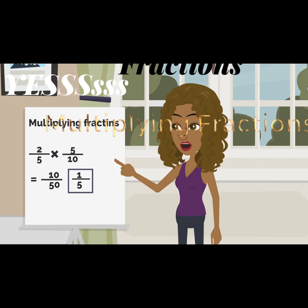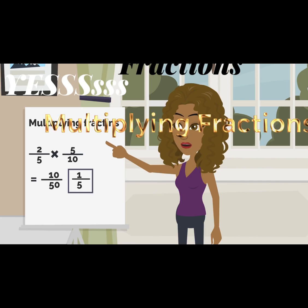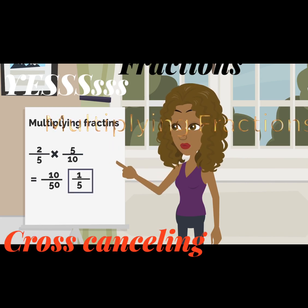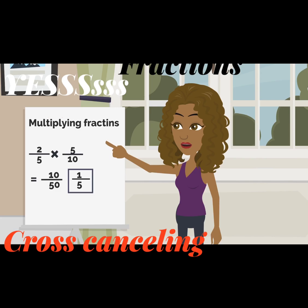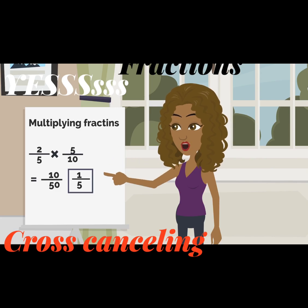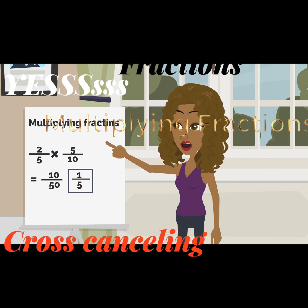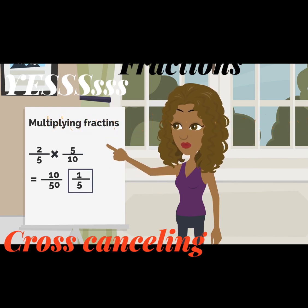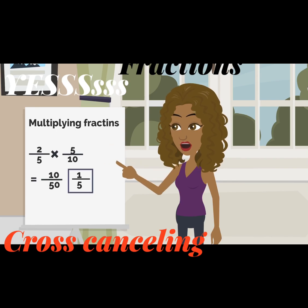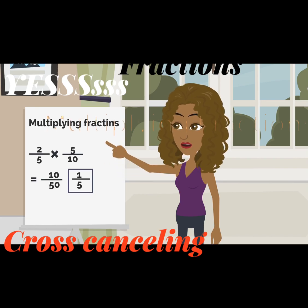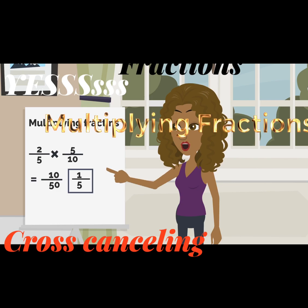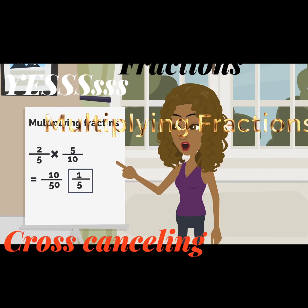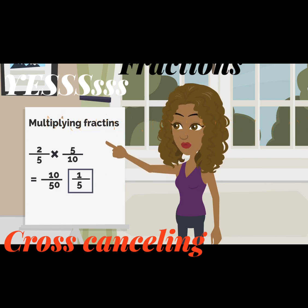In cross-cancelling, we're going to say how many times 2 can go into 10, which is 5 times, and how many times 2 can go into itself is 1 time. So the 2 was cancelled and became 1, and the 10 was cancelled and became 5. We're also going to cross-cancel for the 5s: 5 goes into 5 one time, and 5 goes into itself one time.